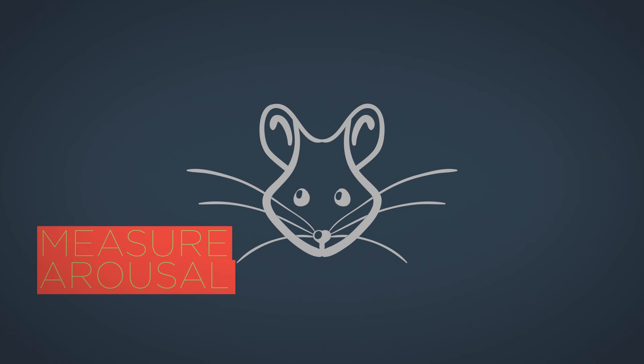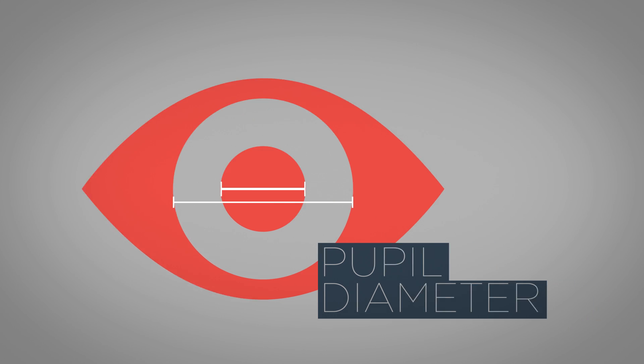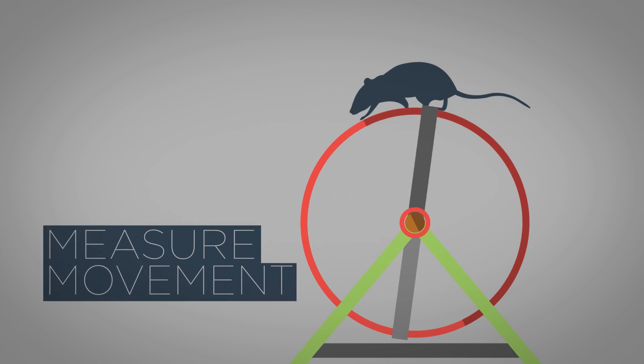To measure arousal, we made movies of the mouse's eye and extracted pupil diameter. To measure movement, we tracked the position of a mouse on a wheel.